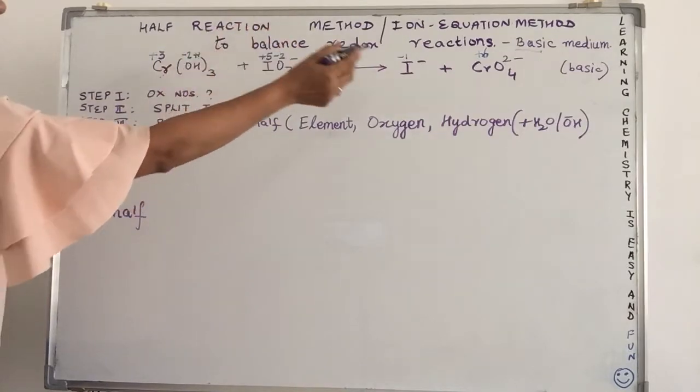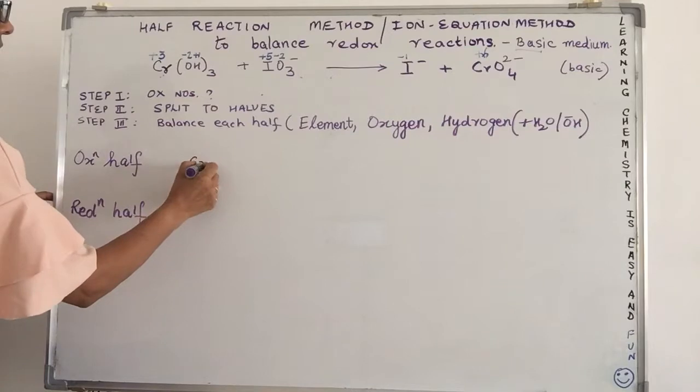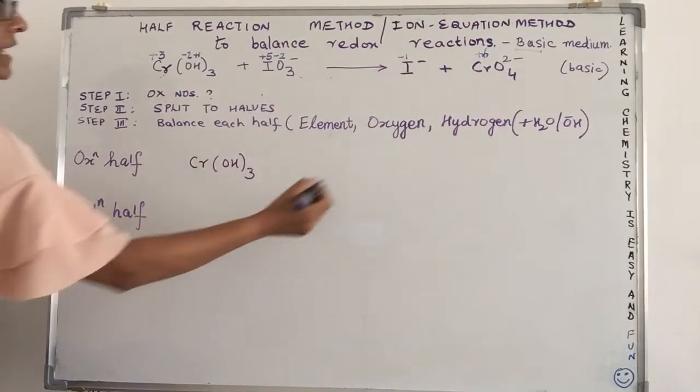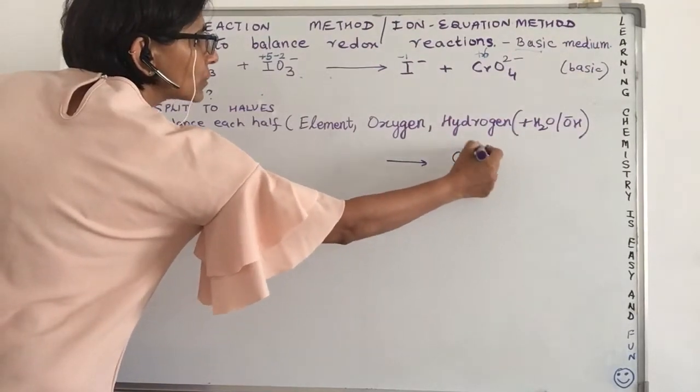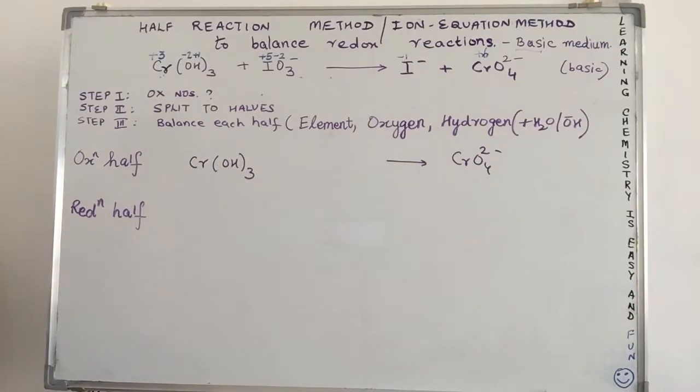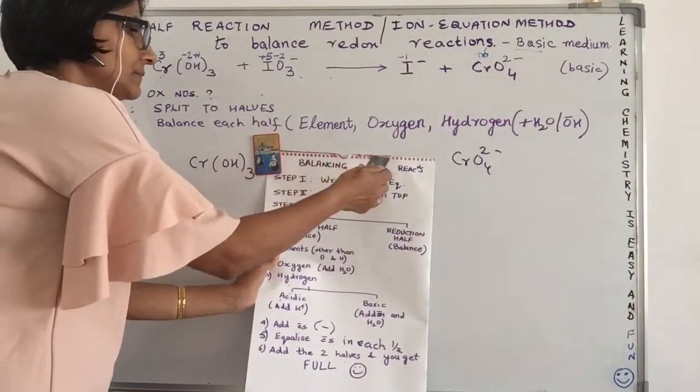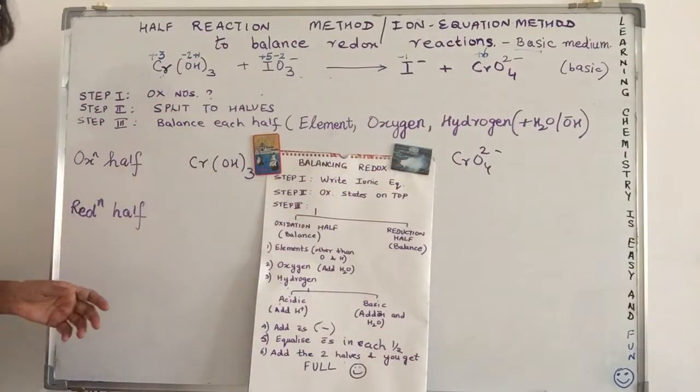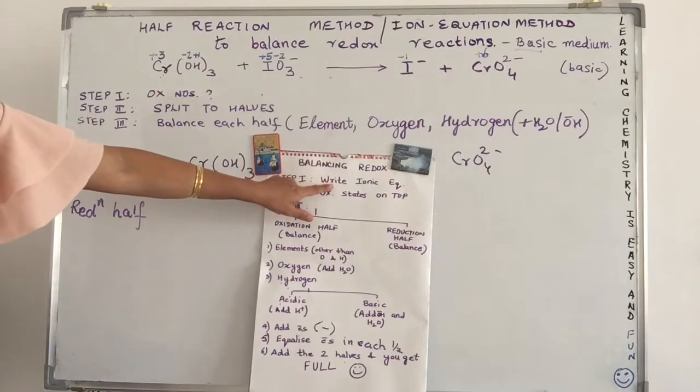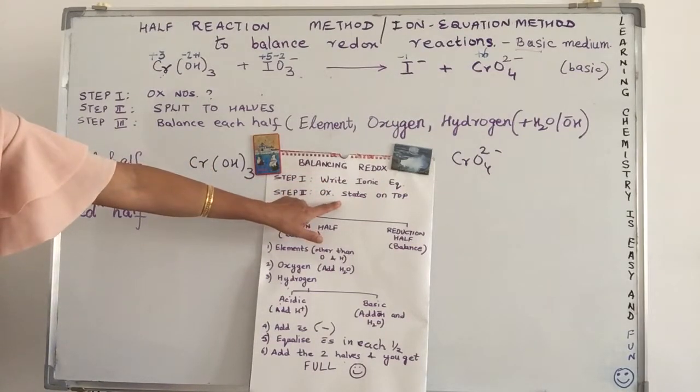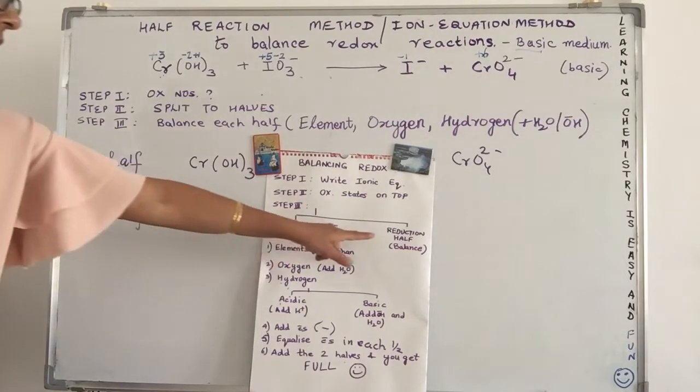If you notice, chromium is changing from +3 to +6. So my oxidation half is Cr(OH)₃ giving me CrO₄²⁻. Why am I leaving some space on the left hand side is because I want to ensure that there is ample space in order to introduce or add the reactant and the product on each side. So I've got the oxidation half. Let me now first balance the oxidation half. In order to balance, if you remember, we've already given you this chart wherein you've got the steps listed.